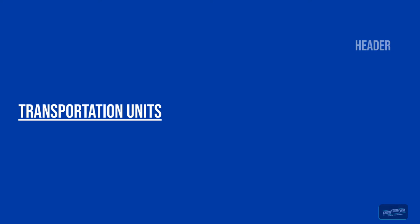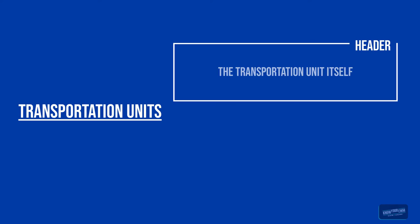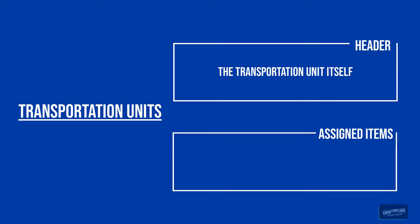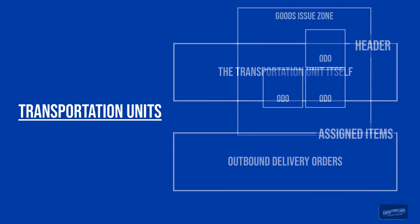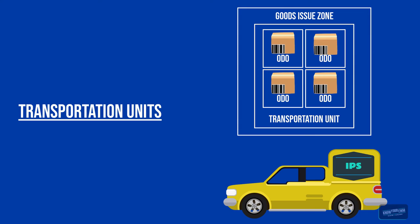Now let us have a look at the transportation unit objects. We have a header level — the transportation unit itself — and we have a lot of items assigned to it: the outbound delivery orders. We can now start the loading process.